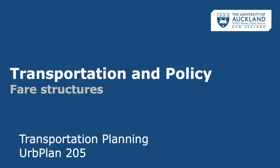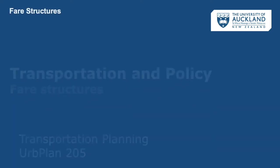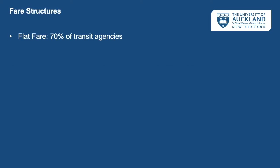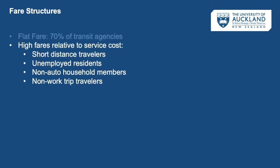How are fares typically structured? There are a number of different ways that public transportation agencies structure their fares. The simplest is through flat fare systems — 70% of transit agencies follow this approach. You get on a bus and pay a dollar, you get on the rail and pay two dollars, no matter where you're going or when. But this simplified, easy-to-understand fare structure also has some costs for both the transit operator and the rider.